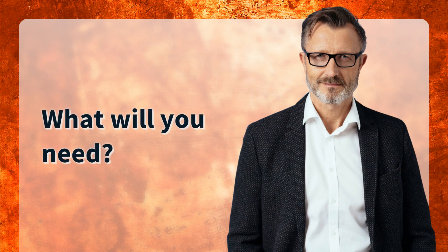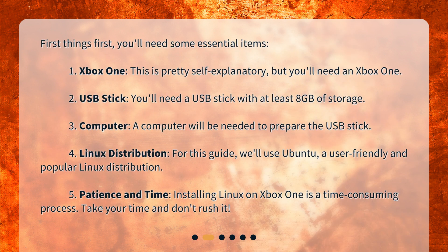What will you need? First things first, you'll need some essential items. 1. Xbox One — you'll need an Xbox One. 2. USB Stick — a USB stick with at least 8GB of storage. 3. Computer — a computer to prepare the USB stick. 4. Linux Distribution — for this guide, we'll use Ubuntu, a user-friendly and popular Linux distribution. 5. Patience and Time — installing Linux on Xbox One is a time-consuming process, so take your time and don't rush it.